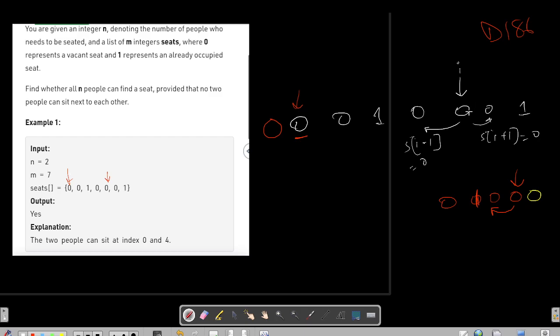And once I have placed the person here, I cannot place the person either in the immediate left, that is i minus one, or i plus one. So that means if we want to check further, then we need to move by i plus two. That's the only thing. Yep.